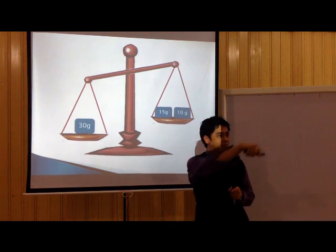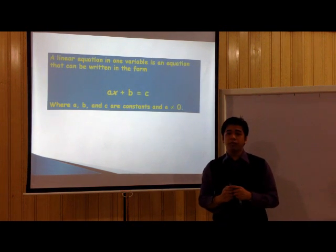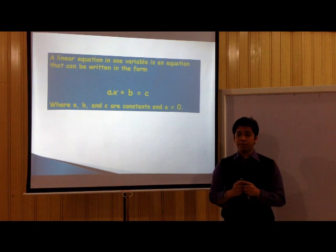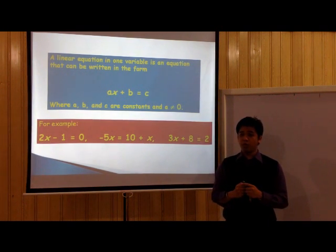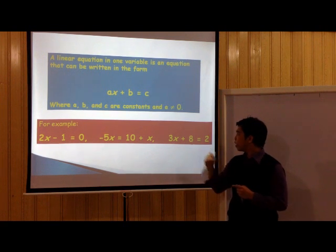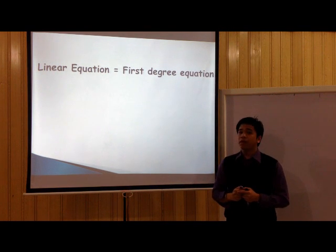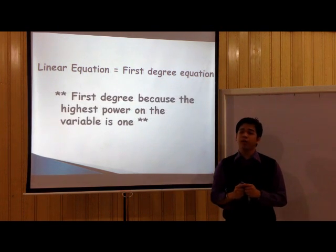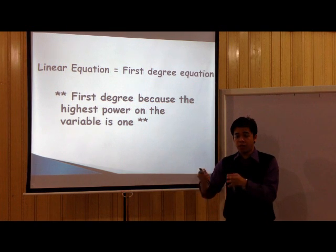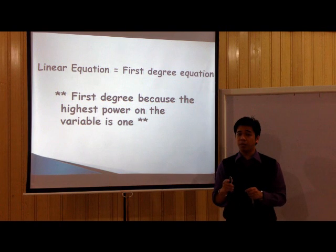What exactly is a linear equation? A linear equation in one variable is any equation that can be written in the form AX plus B equals C, where A, B, and C are constants, and A is not equal to 0. The following are examples of linear equations in one variable: 2X minus 1 equals 0; negative 5X equals 10 plus X; 3X plus 8 equals 2. We also said that a linear equation is a first degree equation, meaning the highest power or the highest exponent in your variable must not be greater than 1, and it must not be less than 1 — it just has to be 1.